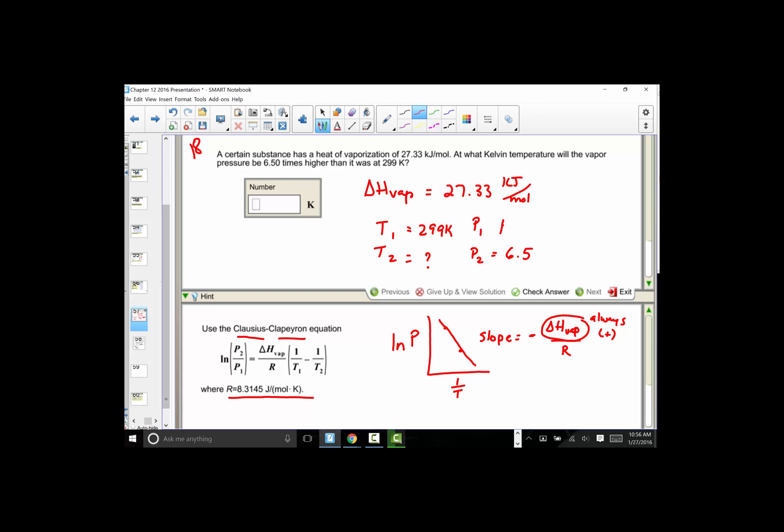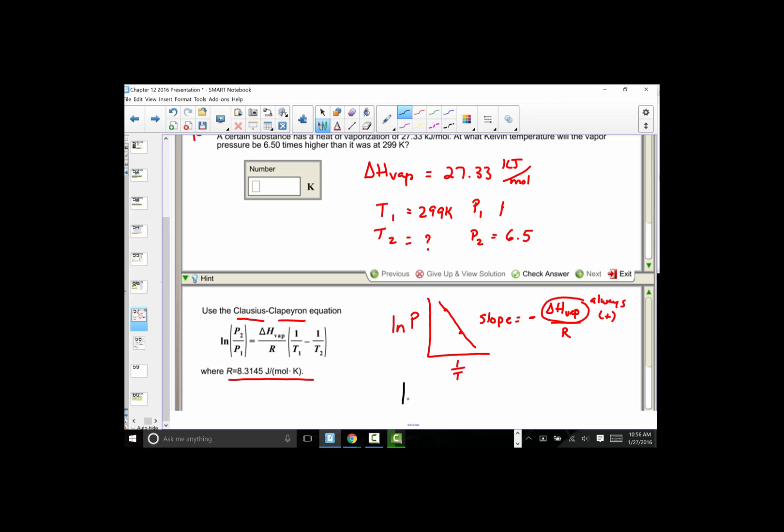So it's really just turning into a plug-and-chug type of formula. We have the natural log of the ratio of P2 over P1. There's no units, but that's okay. As long as they're the same units, this ratio works just fine. 6.5 compared to 1 is showing a pressure that is 6.5 times larger than the original. The delta H of vaporization was given to us as 27.33. Notice that's in kJ per mole, but I also want to make sure that I have an agreement here with the R constant.